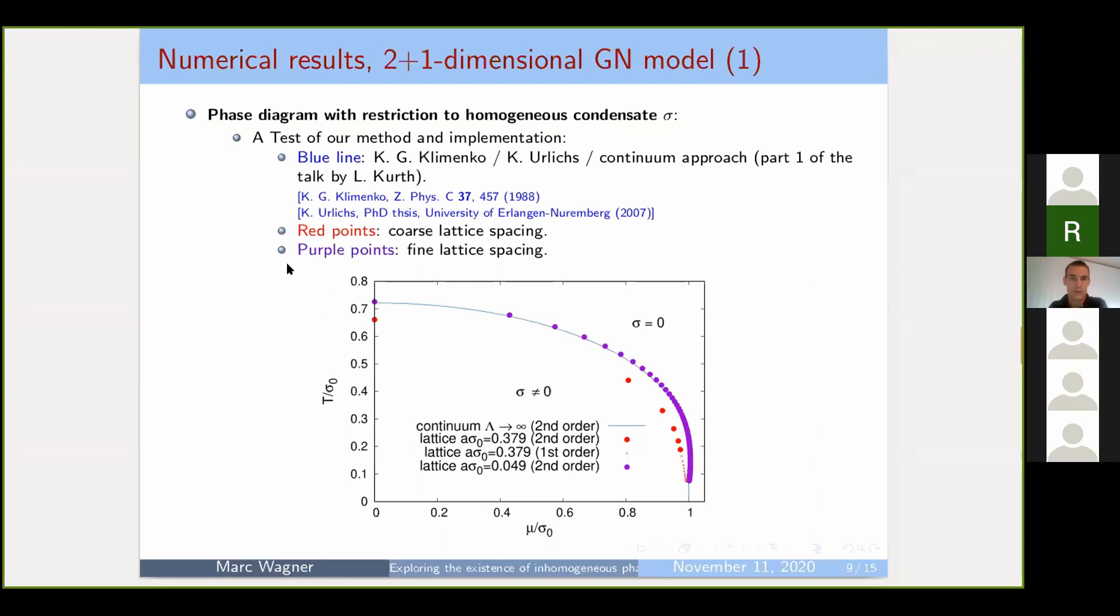Now let's come to results. Here it's a very simple thing—we restricted the condensate to a constant to study the homogeneous condensate. This was studied already before. I think the first time by Constantin Klimenko many years ago, also later by other people. So it's more a check of our method and implementation. The blue lines are the known results, red dots are coarse lattice spacing, purple dots are fine lattice spacing. I think the plot is quite convincing that it seems to work.